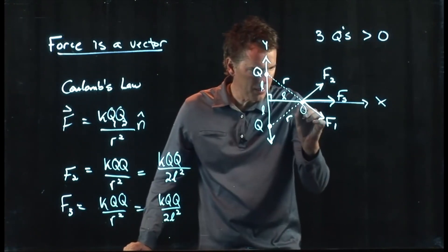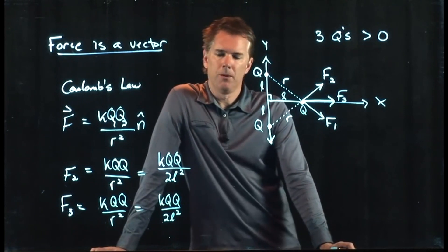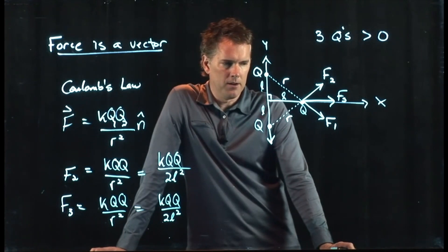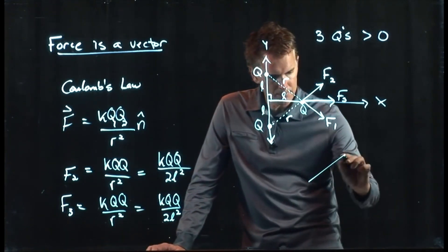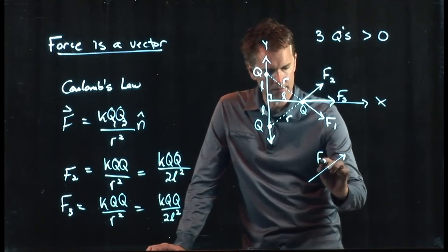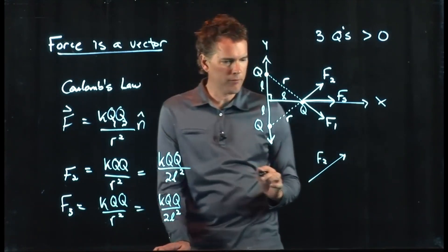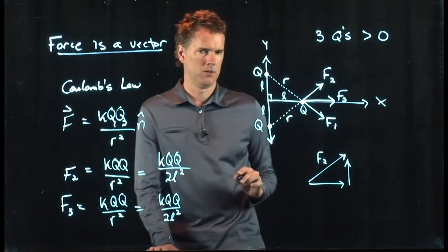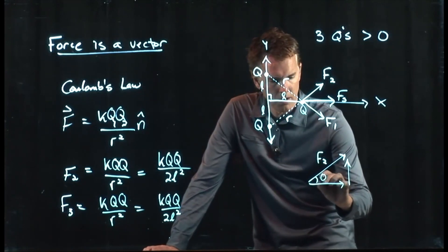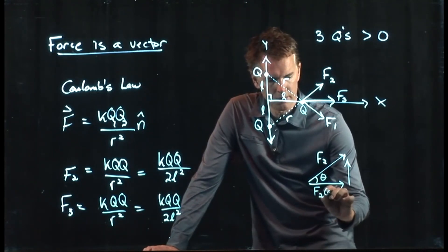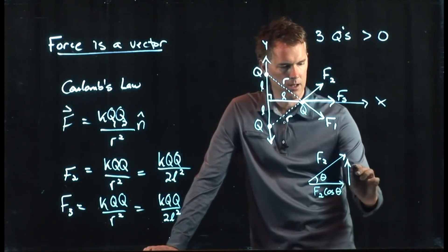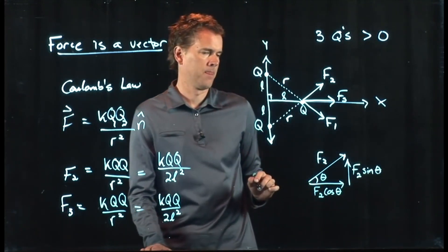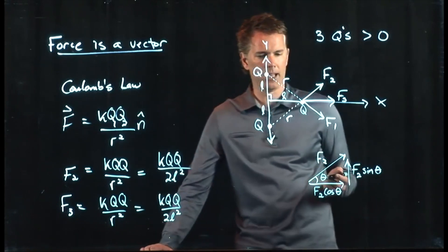We're looking at the force on this one right here. But now we have to worry about the direction. Let's think about the direction here. F2 is going up like that. And F2, therefore, has some component in that direction and some component in that direction. And the components are the following. The horizontal is F2 cosine theta. The vertical is F2 sine theta.